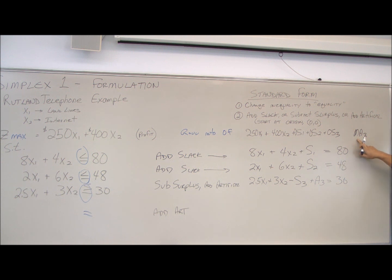We use the coefficient M, which stands for a very large number. In this case, I'll just use million. And since we have a maximization function, we subtract our M. If we had a minimization problem, we would add M.